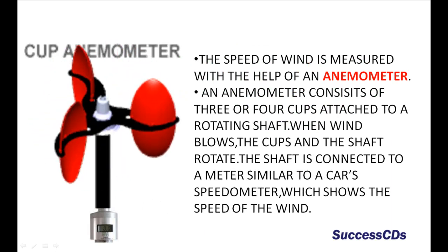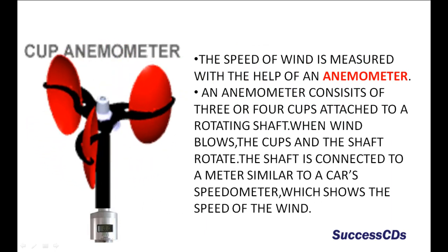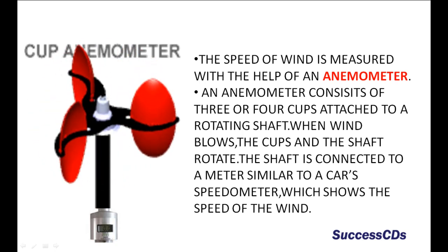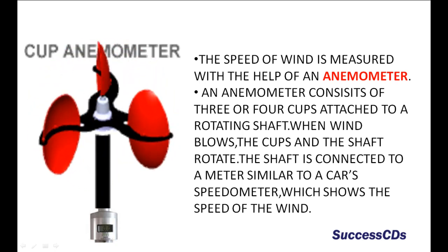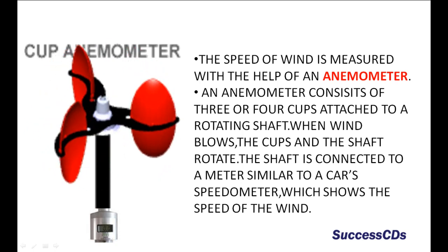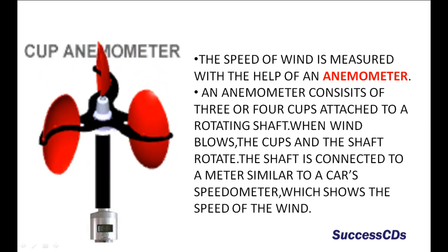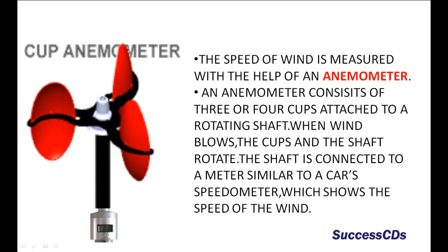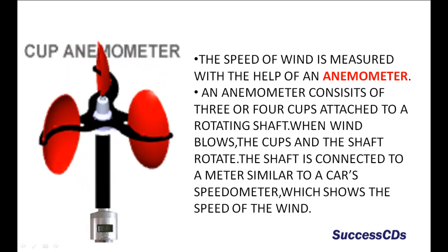The speed of wind is measured with the help of an anemometer. An anemometer consists of three or four cups attached to a rotating shaft. When wind blows, the cups and the shaft rotate. The shaft is connected to a meter similar to a car's speedometer which shows the speed of the wind.